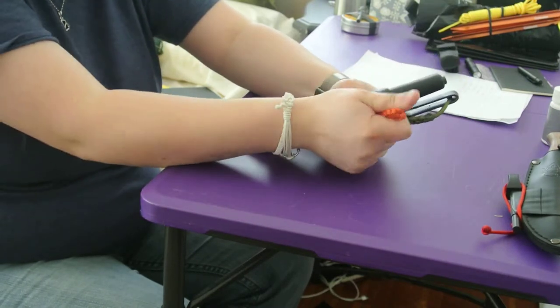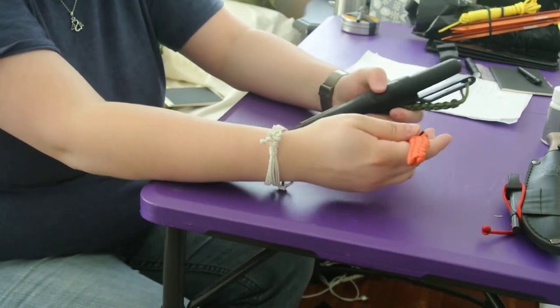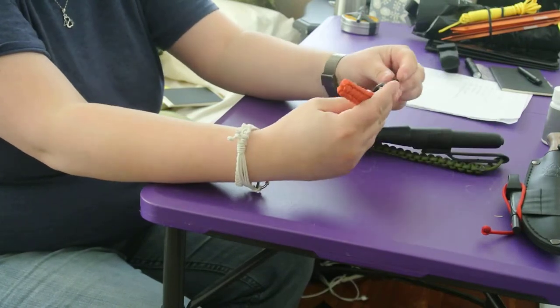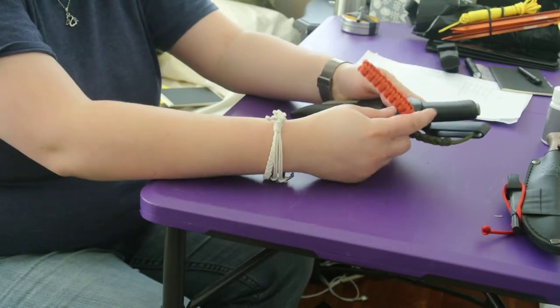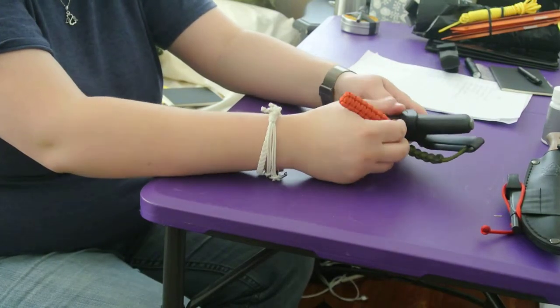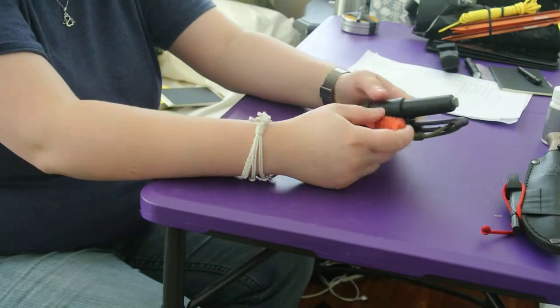It comes with the sharpener and the fire steel here. The fire steel is really secure in there. You really have to yank on it to get it out. It's a decent sized fire steel and I added some orange paracord to it. This knife I'm just super impressed with. It came razor sharp.